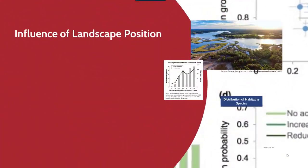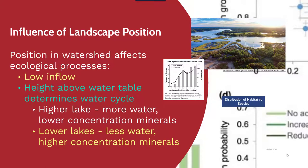Landscape position can also have an influence on the ecology of an area. Position in a watershed in particular will affect ecological processes. For example, there can be low inflow in some regions, and the height above the water table can determine the water cycle within lakes or rivers. A higher lake above the water table will contain more water but have a lower concentration of minerals.